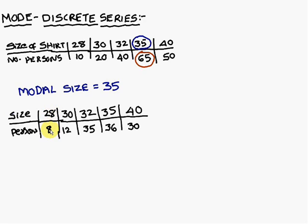28 size by 8%, 30 size by 12%, 32 is chosen by 35%, 35 is chosen by 36%, 40 size is chosen by 30%. What is the highest frequency? It is 36%.